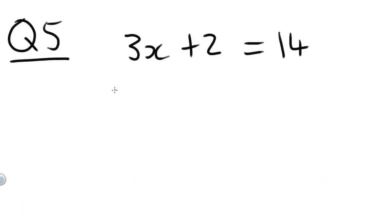Question 5. Let's do something a little bit more tricky. 3X plus 2 equals 14. Now before we can do anything with this 3X term, we have to get rid of everything else. So we have to get rid of everything that doesn't contain an X. So here we have a plus 2. The opposite of plus 2 is minus 2. So subtract 2 from both sides. So we'll end up with 3X on the left-hand side equals 14 minus 2, which is 12.